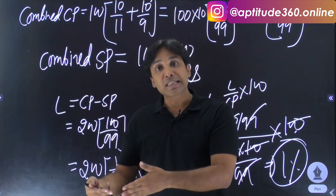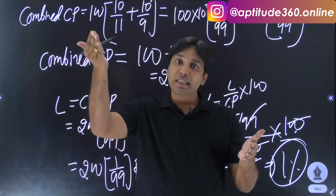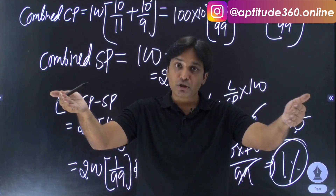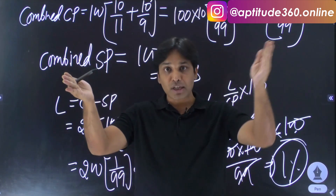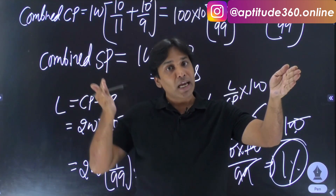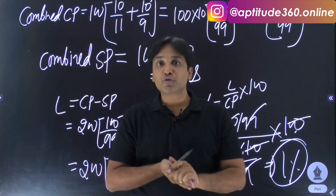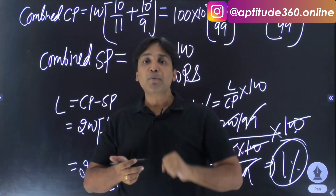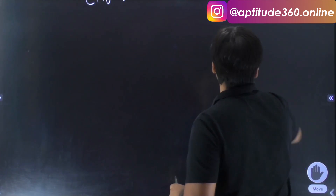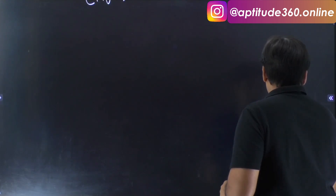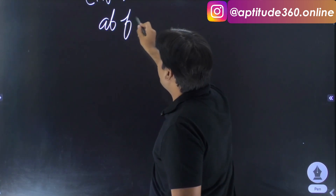So to summarize: when cost prices of two items are same and one is sold at 10% profit and the other at 10% loss, there is no combined loss or profit. But when the two items have the same selling price and are sold at 10% profit and 10% loss respectively, the combined loss percent comes out. The shortcut for this is the AB formula.